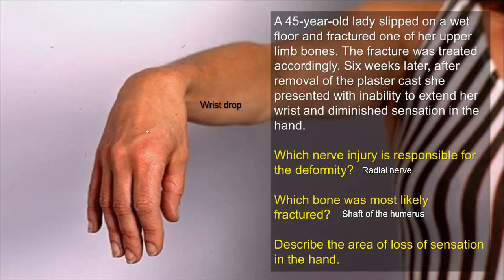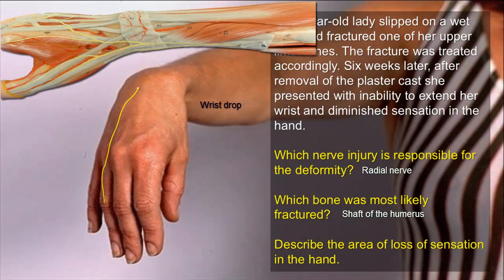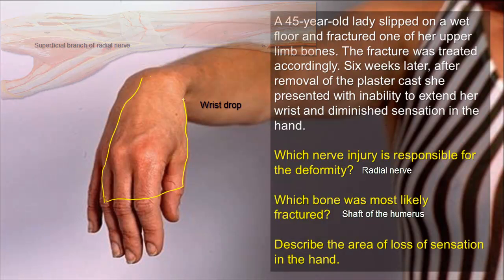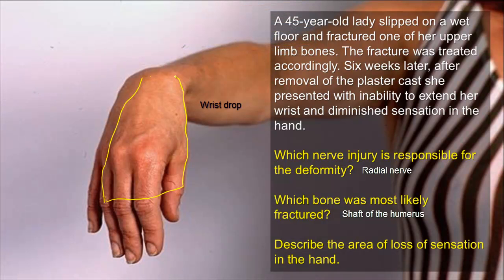Regarding the area of loss of sensation in the hand, there will be loss of sensation on the lateral side of the dorsum of the hand, mainly at the root of the thumb. This area is supplied by the superficial branch of the radial nerve, which supplies the lateral two-thirds of the dorsum of the hand and the lateral three-and-a-half fingers proximal to their nail beds.